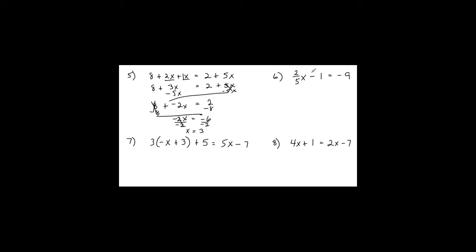Number 6 — do our same change opposite. Notice right off the bat there's a fraction in front of the variable, so remember we'll have to multiply by the reciprocal when we're done. Otherwise it's just a two-step equation. Opposite of the number: positive 1 on both sides. Those cancel, leaving 2 fifths x equals negative 8.